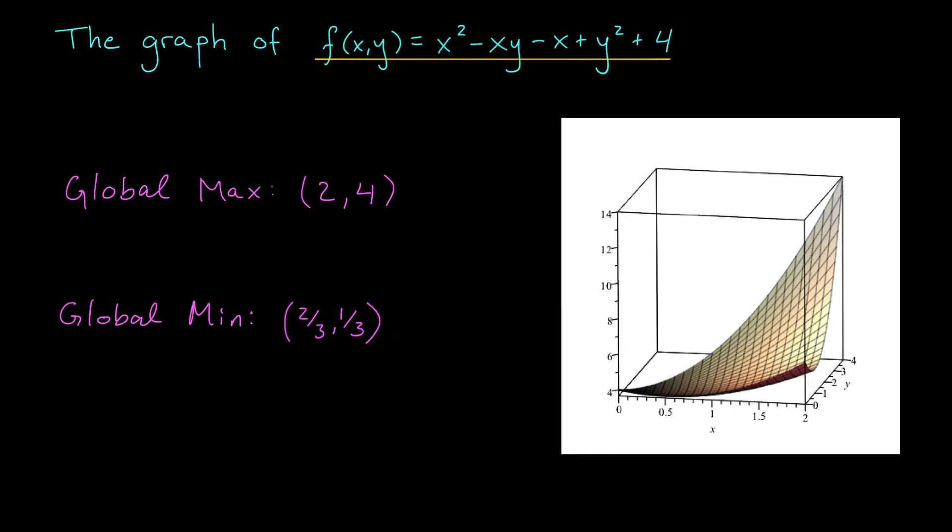We also see that our function dips down to reach a minimum value somewhere around here, around the point (2/3, 1/3). So it seems likely that our answer checks out. The math works and you can see it in the graph.